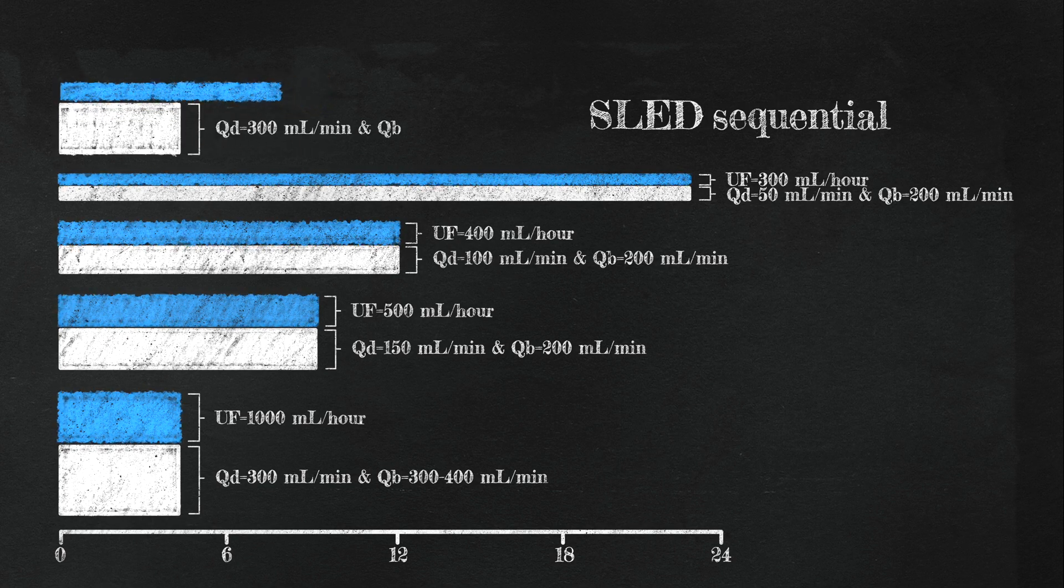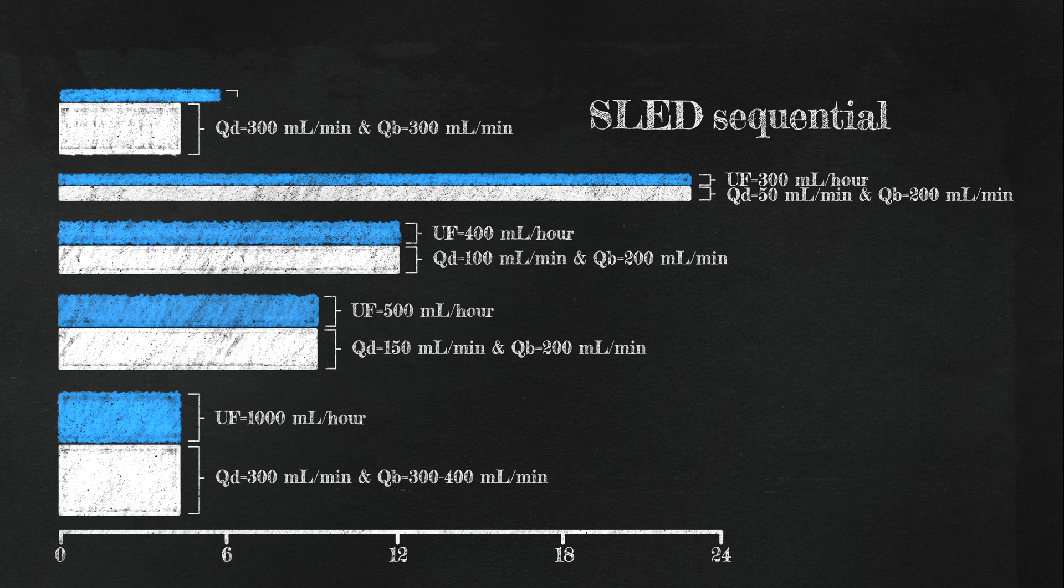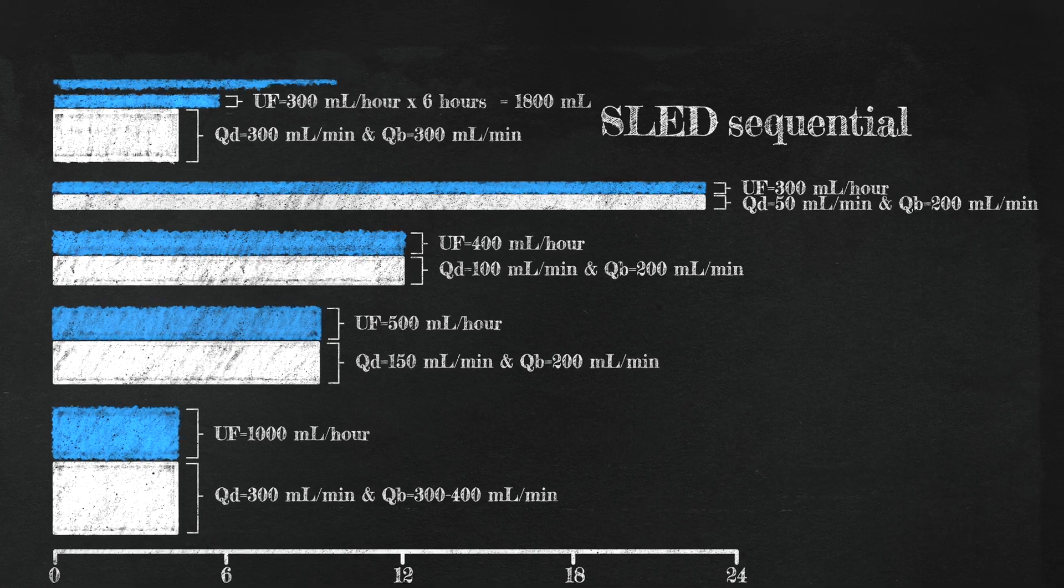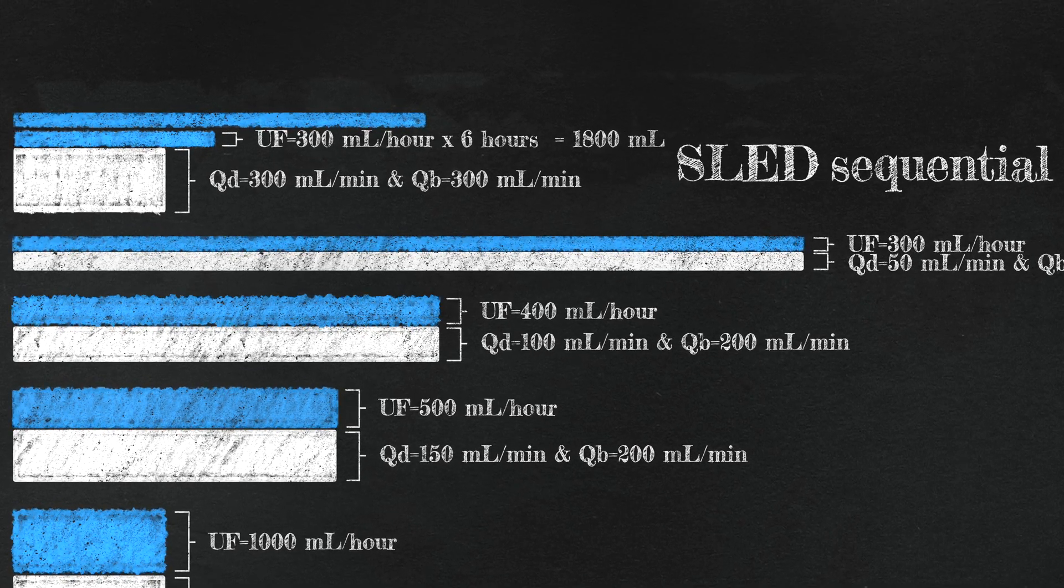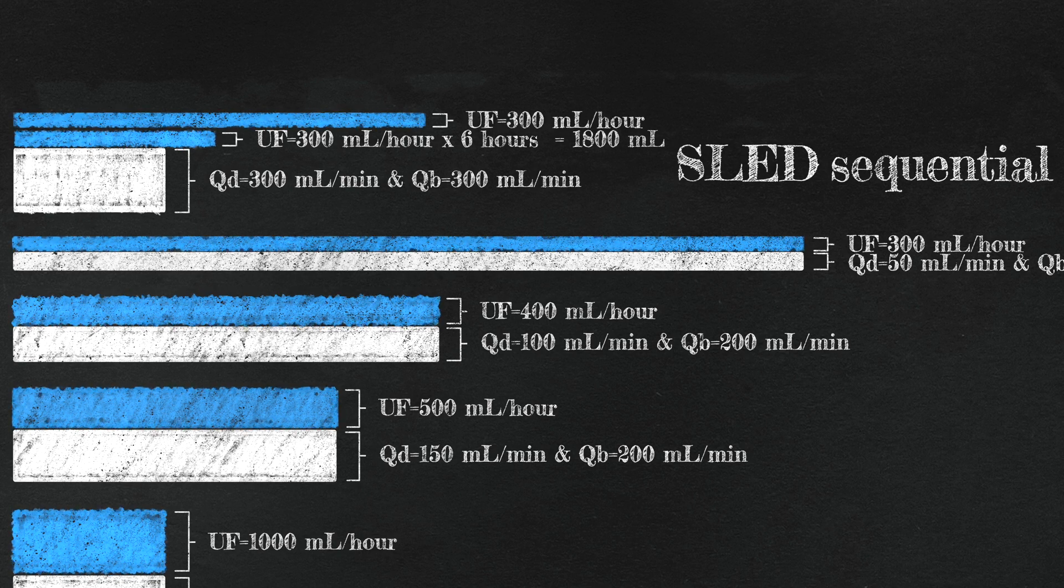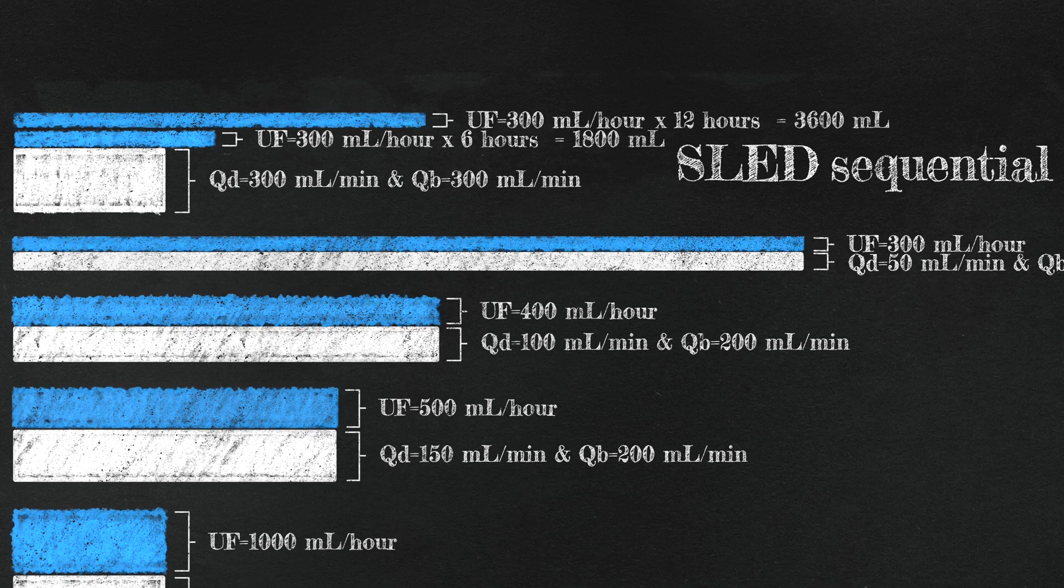In sequential SLED, clearance is limited to the first four hours or so, as in conventional IHD treatment. UF duration, on the other hand, varies based on the total goal, at the same time maintaining hourly UF rate to 300 mLs or less.